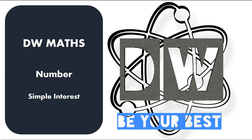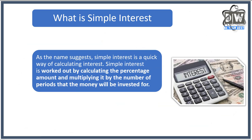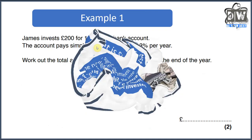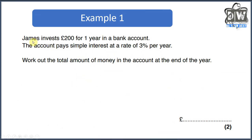Hello everyone and welcome back to another screencast. This one is on number, specifically simple interest, and like the name says it's very very simple. They do try and trip you up and we're going to look at some of those things as we go along. Simple interest is a basic way of calculating quick interest — it's worked out by calculating the percentage amount and multiplying it by the number of periods the money will be invested for. Let's make some sense of that by doing a few questions.